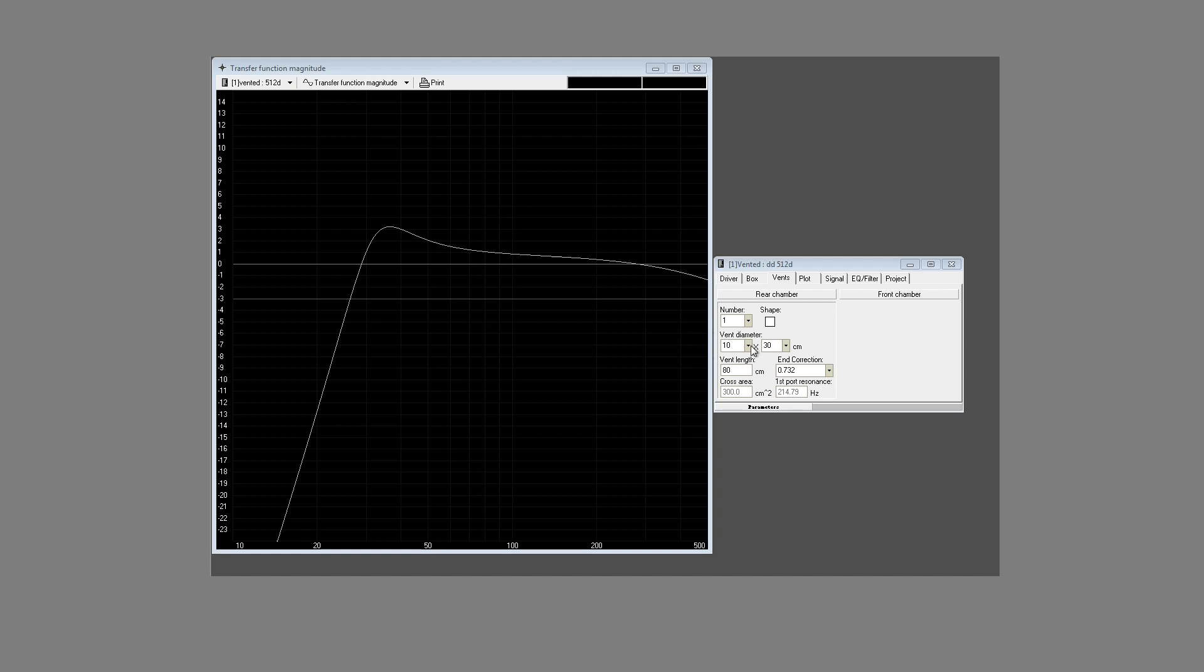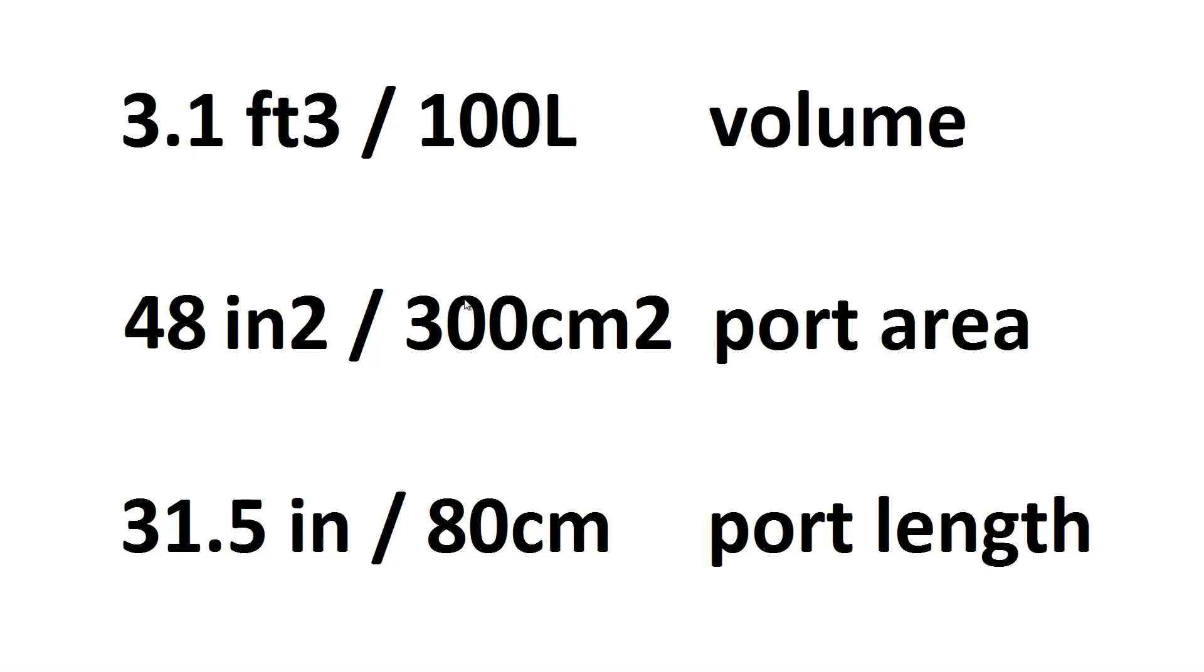You can see here we've got a 10 by 30 centimeter port with a length of 80 centimeters, and this comes out with a tuning of about 30 hertz in a 100 liter enclosure. So we can see a 3.1 cubic foot, 100 liter volume, 48 square inch port area, 300 square centimeters, and 80 centimeters port length. This ratio right here is right on the 16 square inches per cubic foot.